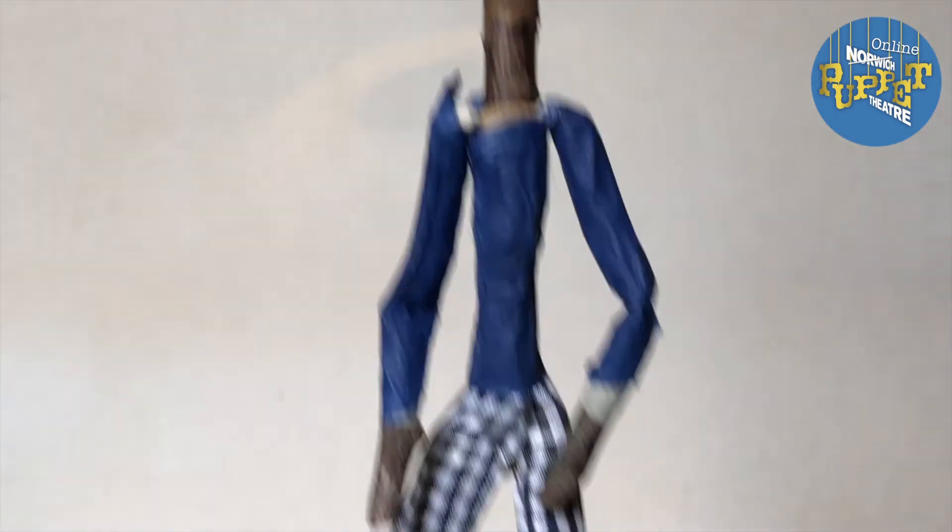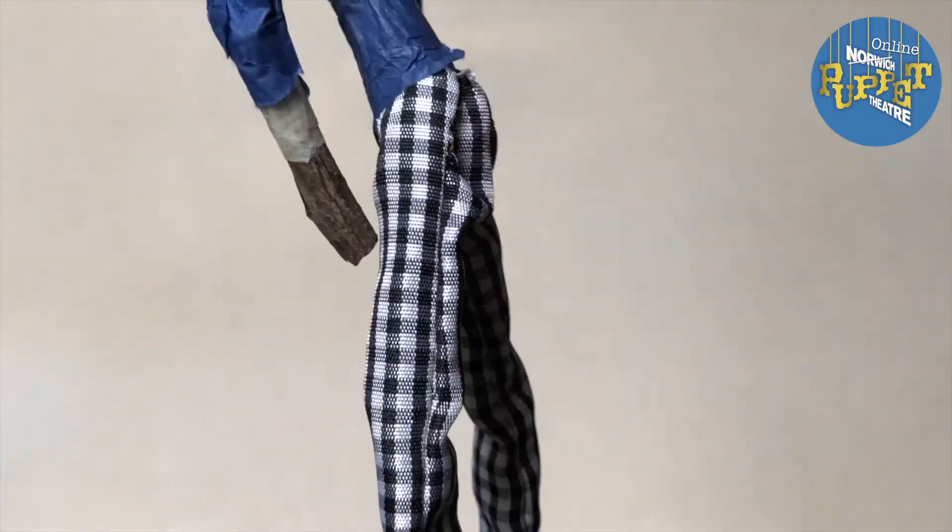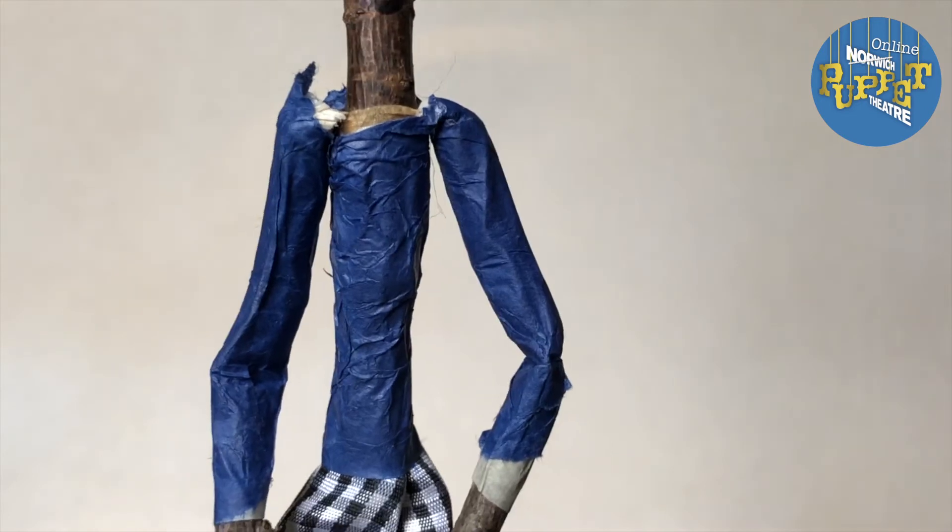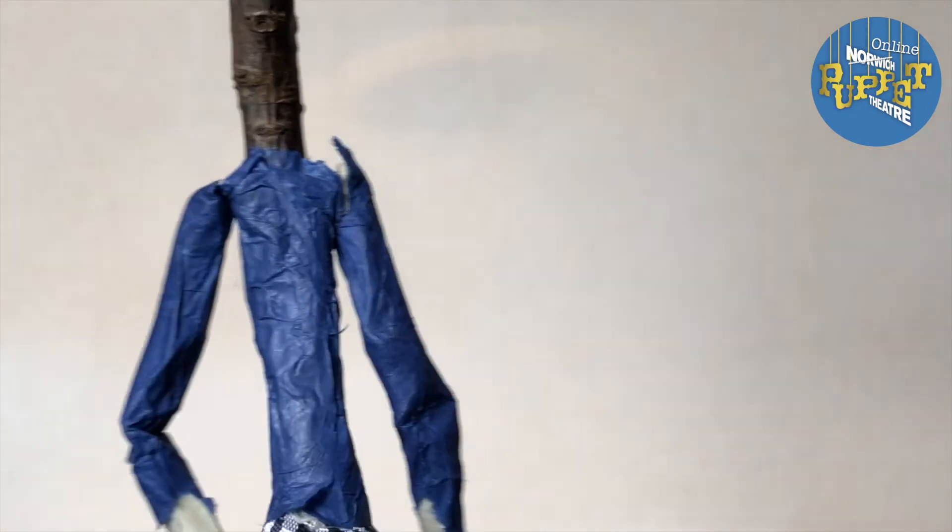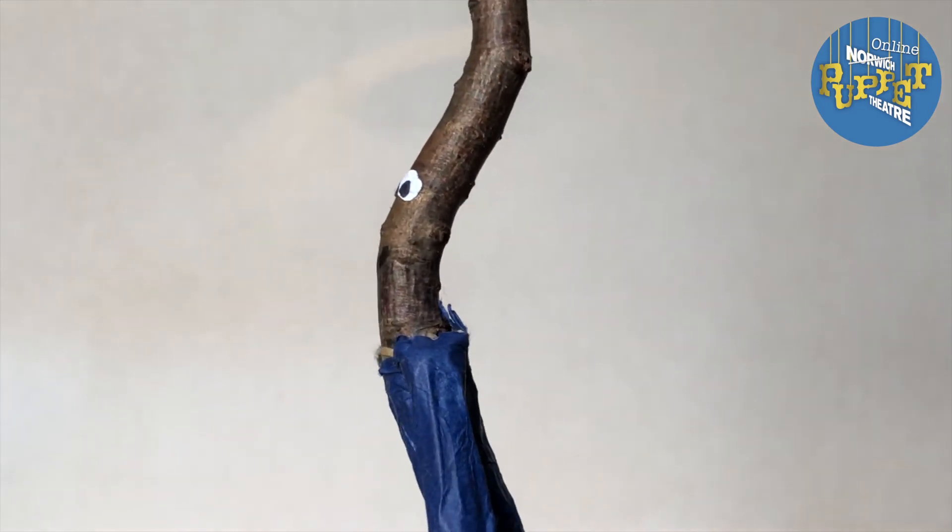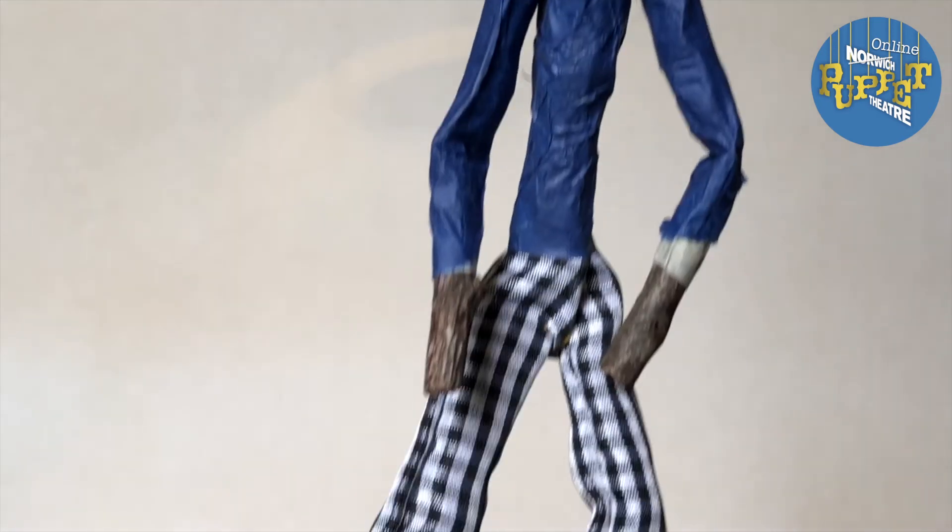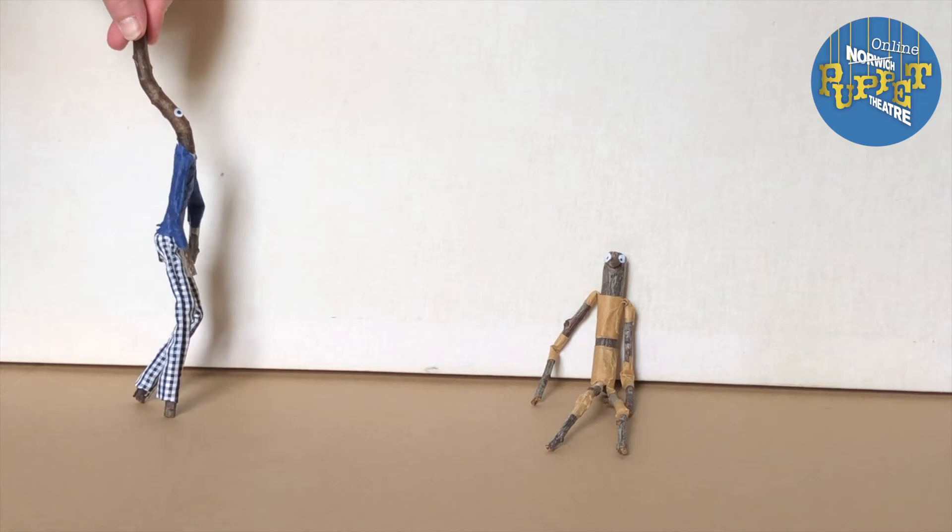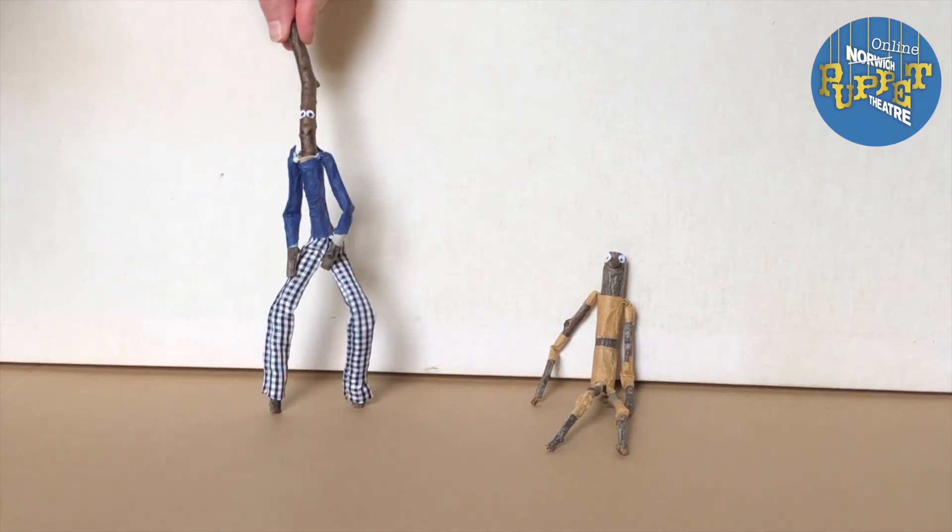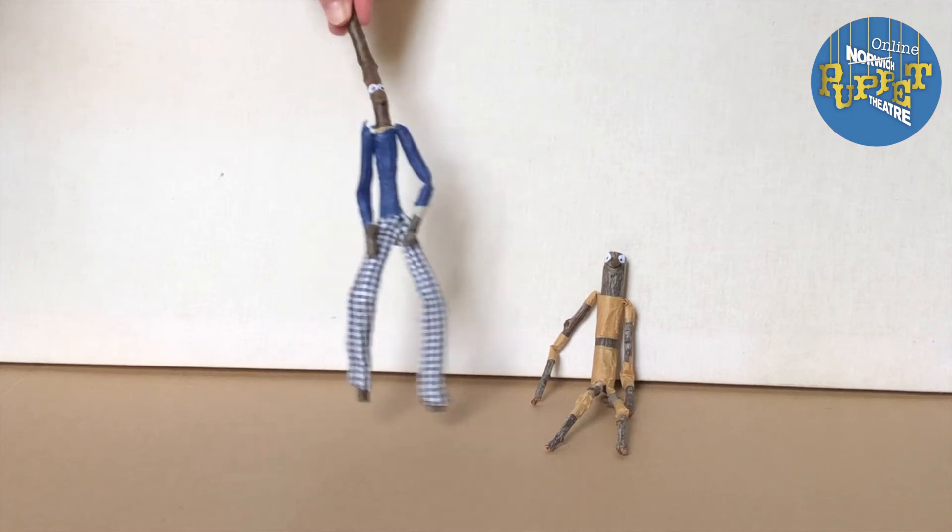Here's an example of a different puppet that's made in the same way. So for this one I've used ribbon and sewn it together to make a pair of trousers which I've then taped on. My masking tape is covered all the way down the arms and around the whole of the body, and then I've used tissue and glue to color that in. The stick is just a little bit longer, which means that I can use it as a control stick for moving my puppet around.